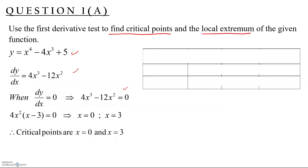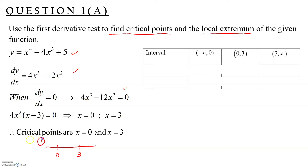We build a table with intervals from negative infinity to infinity, stopping at 0 and 3. The timeline gives us three intervals: negative infinity to 0, 0 to 3, and 3 to infinity.